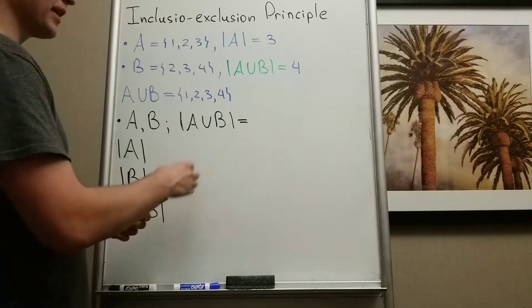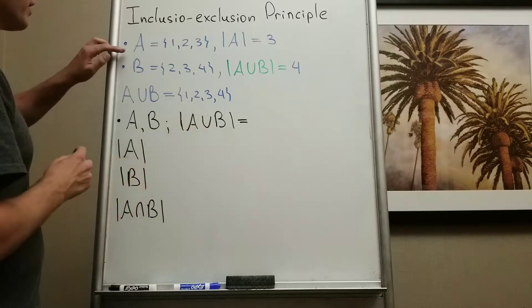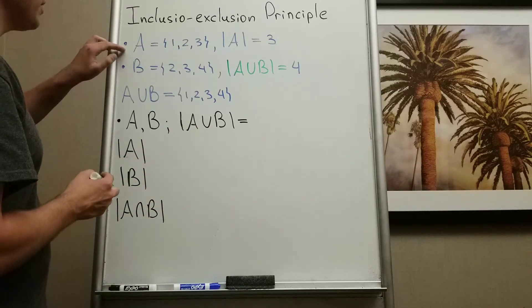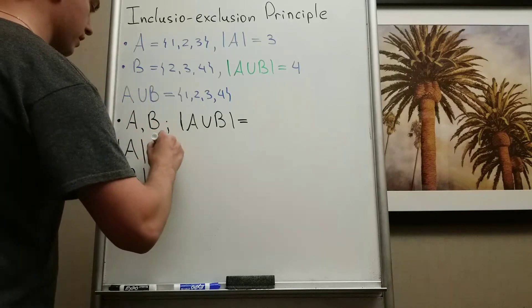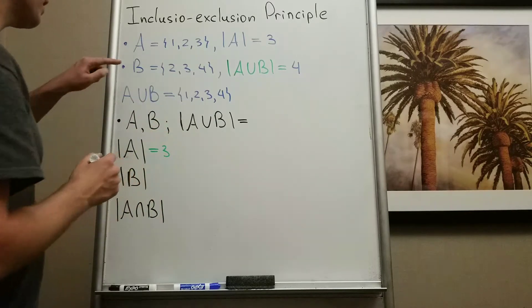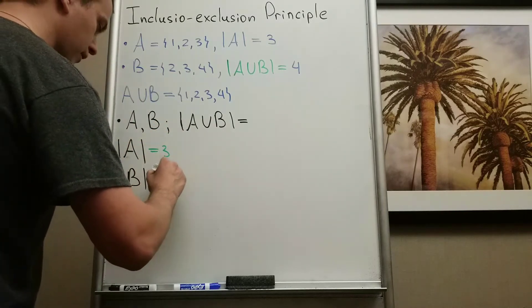Okay, and let's try to guess the formula in this case. So here I can see how many elements I have in A. I have three elements. How many elements I have in B? I also have three elements.